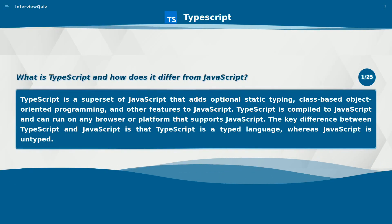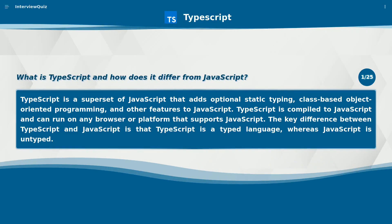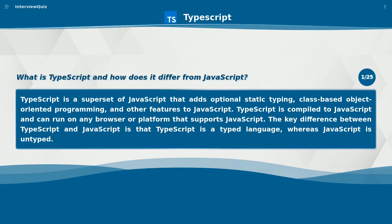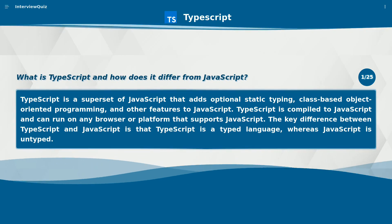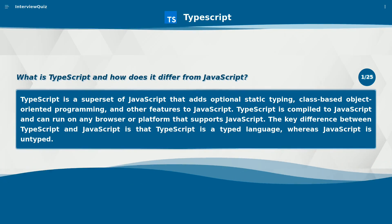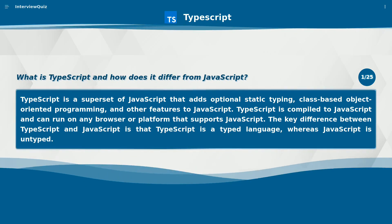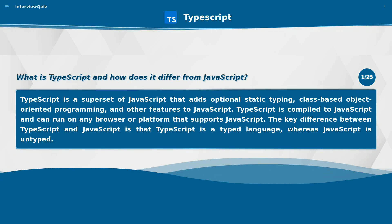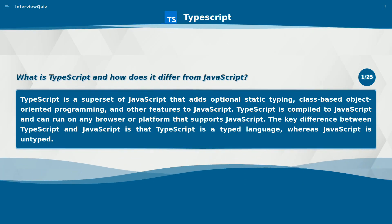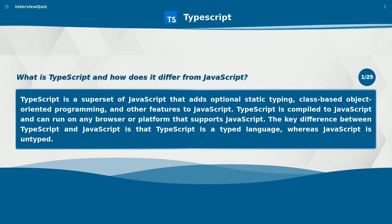What is TypeScript and how does it differ from JavaScript? TypeScript is a superset of JavaScript that adds optional static typing, class-based object-oriented programming, and other features to JavaScript. TypeScript is compiled to JavaScript and can run on any browser or platform that supports JavaScript. The key difference between TypeScript and JavaScript is that TypeScript is a typed language, whereas JavaScript is untyped.